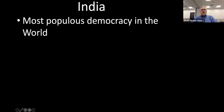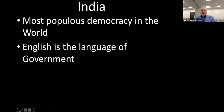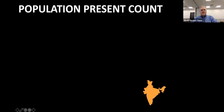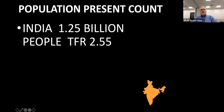India is the most populous democracy in the world. English is the language of government. No country exhibits greater cultural diversity than India. India's population is 1.25 billion, and the people reproduce at a total fertility rate of 2.55 per woman. China has 1.3 billion people and their TFR is a little lower, so they're not refilling the population as fast as India.